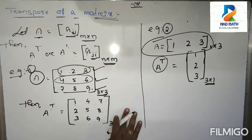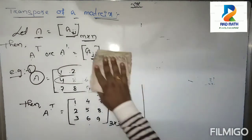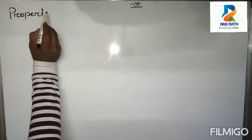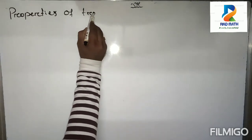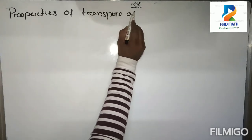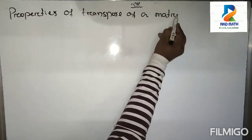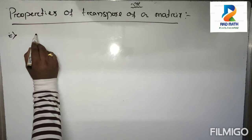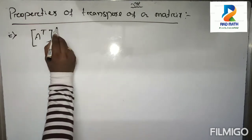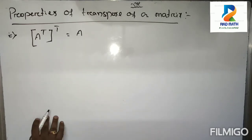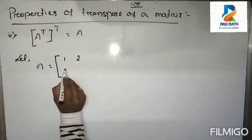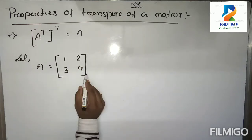Now, there are some properties of transpose of a matrix. The first property is: A transpose, whole transpose, is equal to A. To prove it, let A be the matrix 1, 2, 3, 4 — a 2 by 2 matrix.